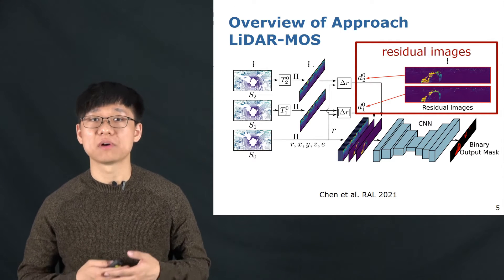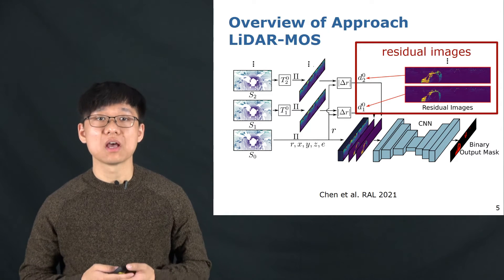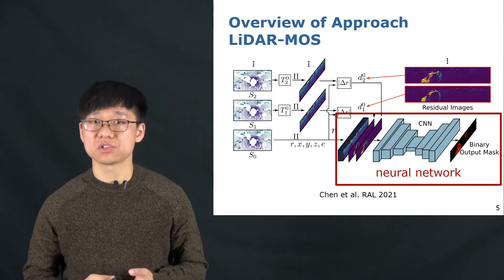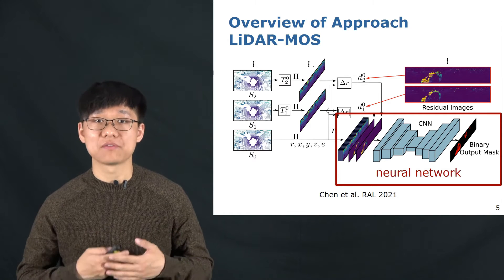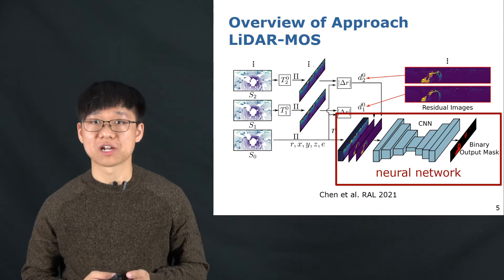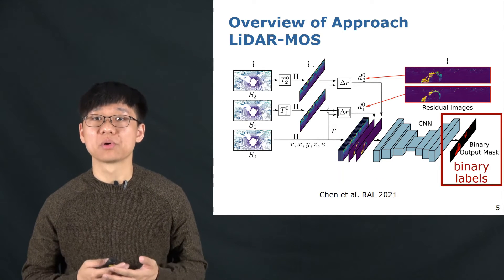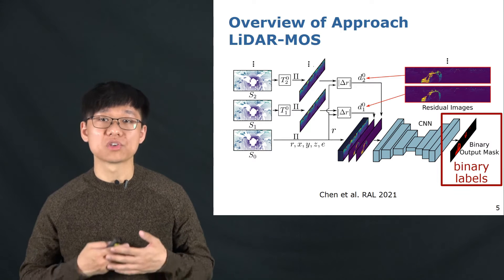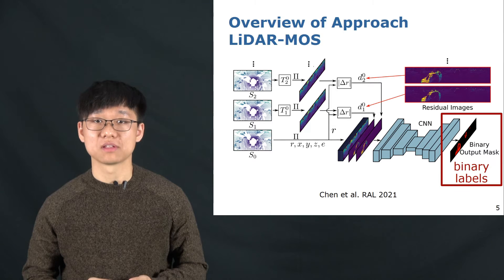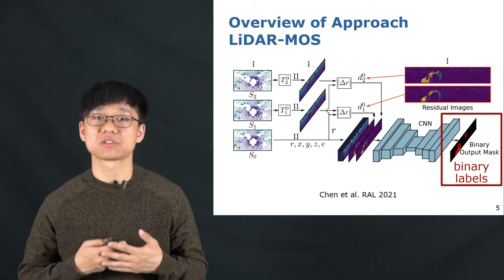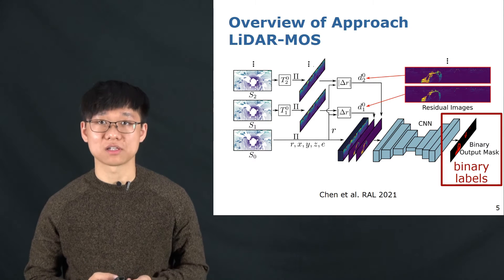I will give more details about how to generate residual images in the following slides. After generating the residual images, they are then concatenated with the current scan and used as the input to the neural network. We then train the network with the proposed binary masks, which only consists of two classes, moving and non-moving. The proposed methods can then separate the moving and static objects in the LiDAR data.